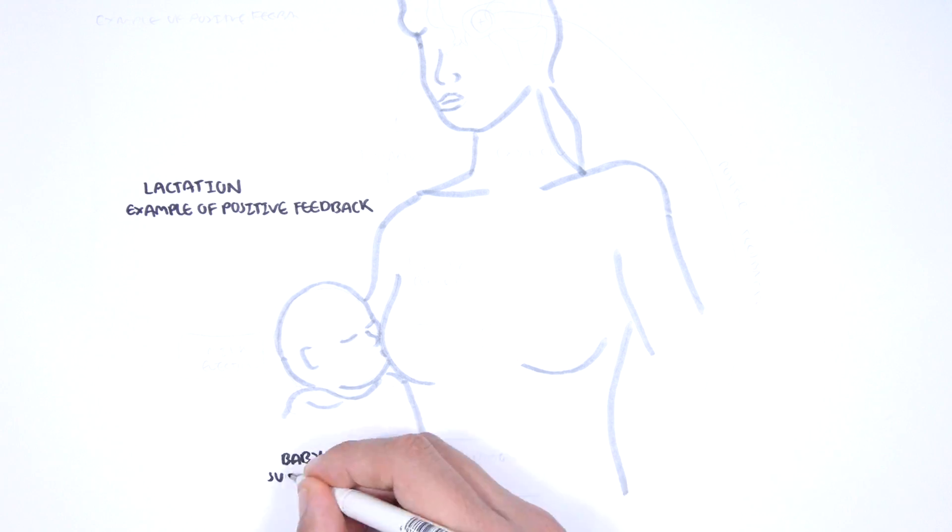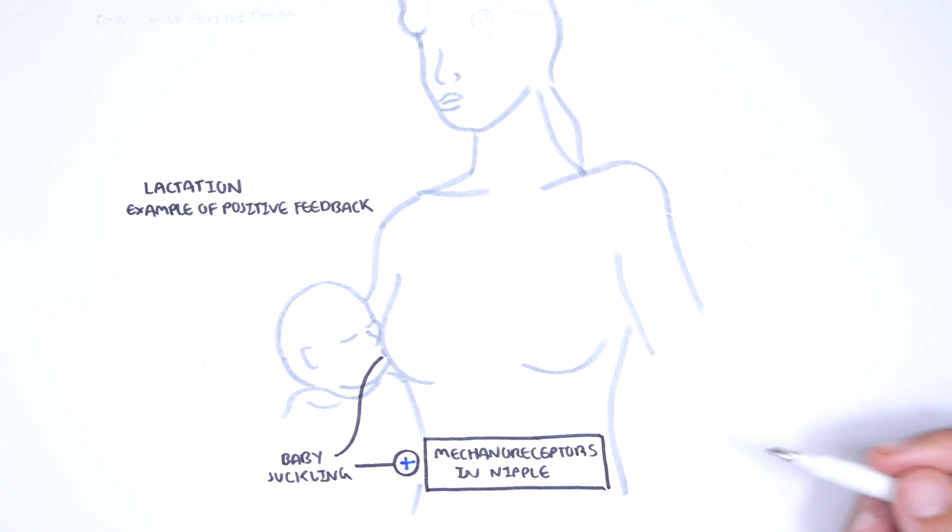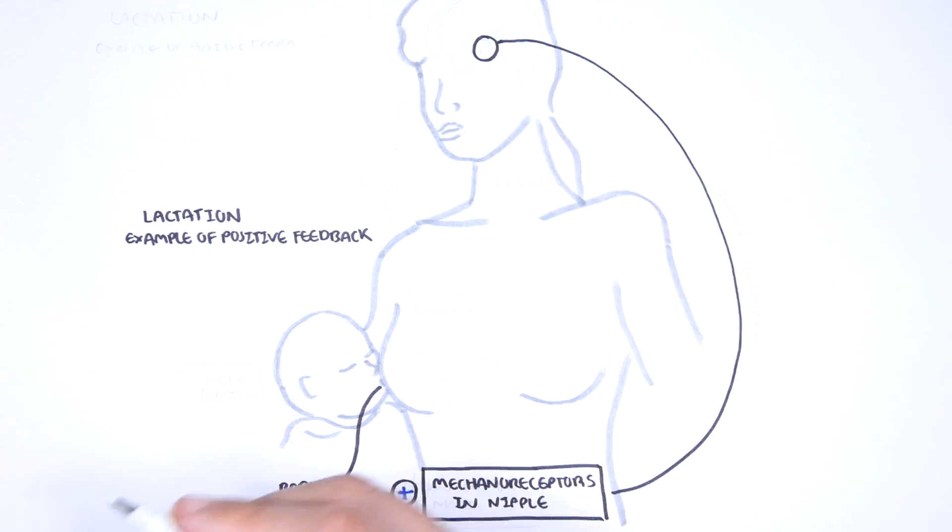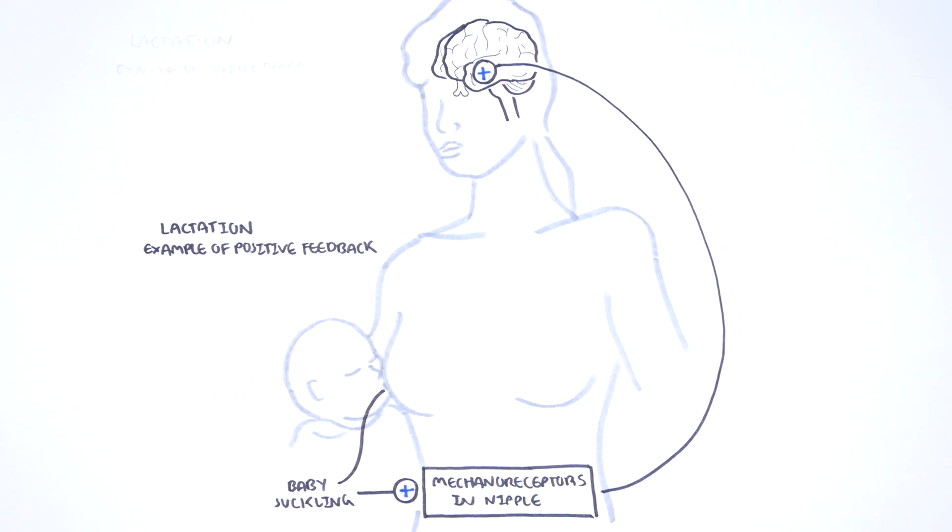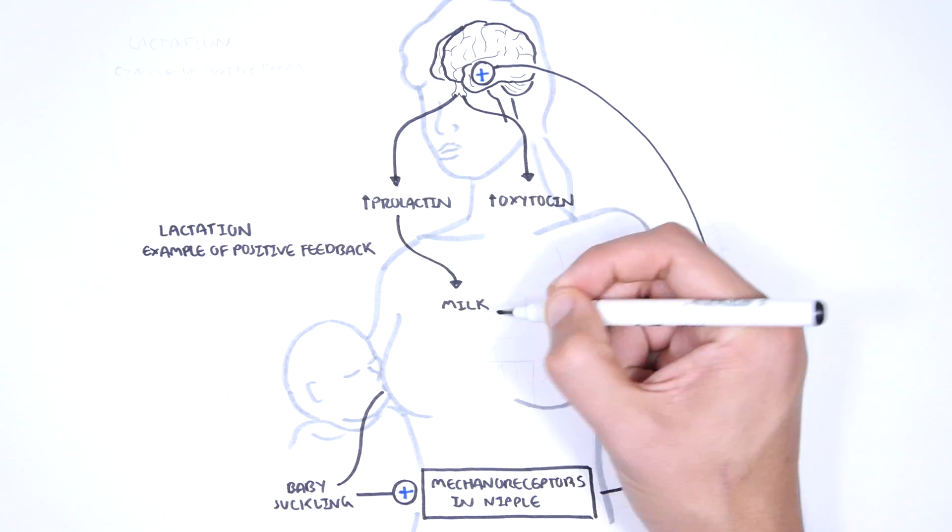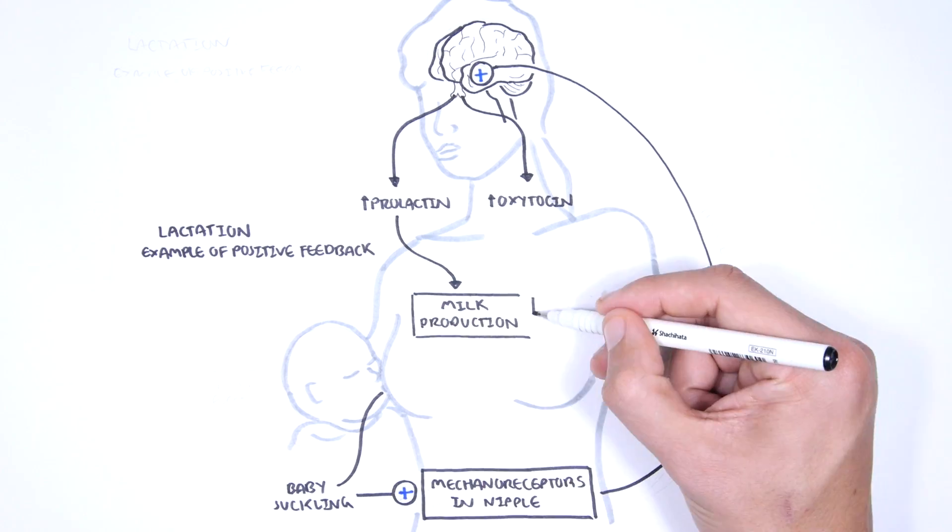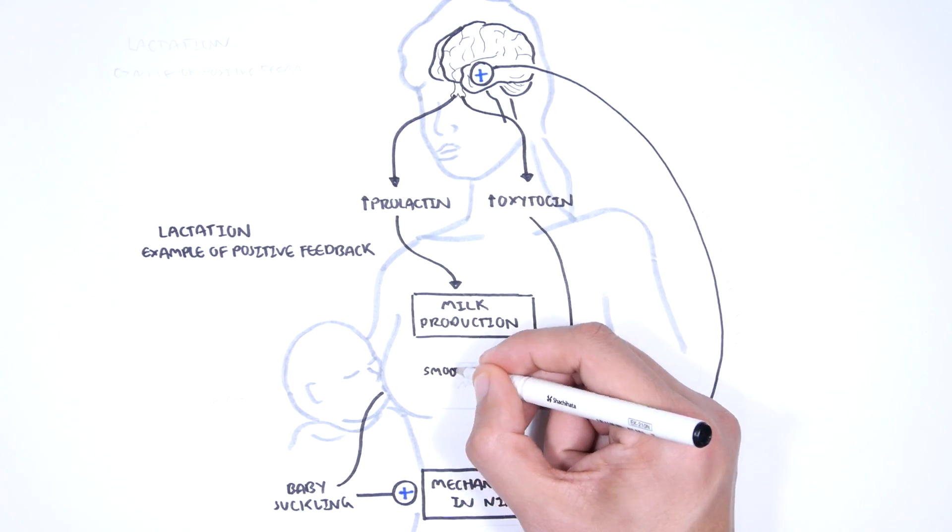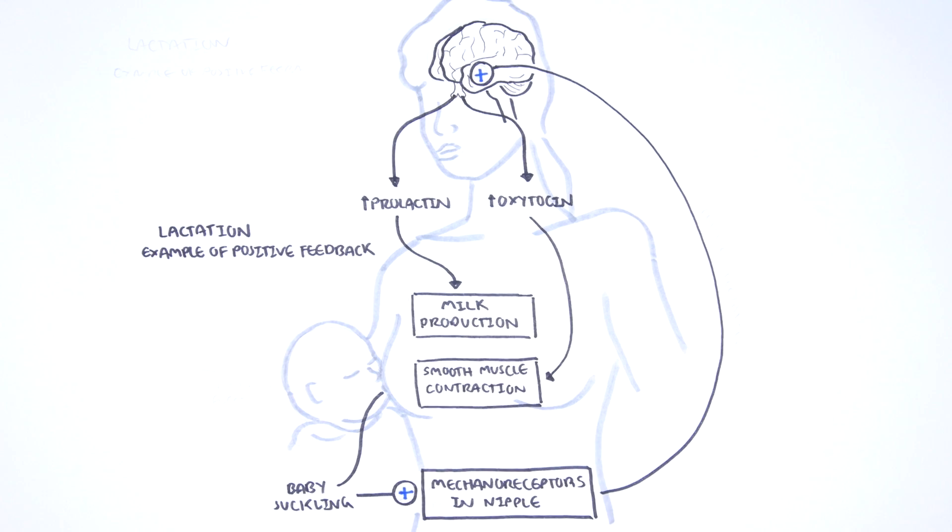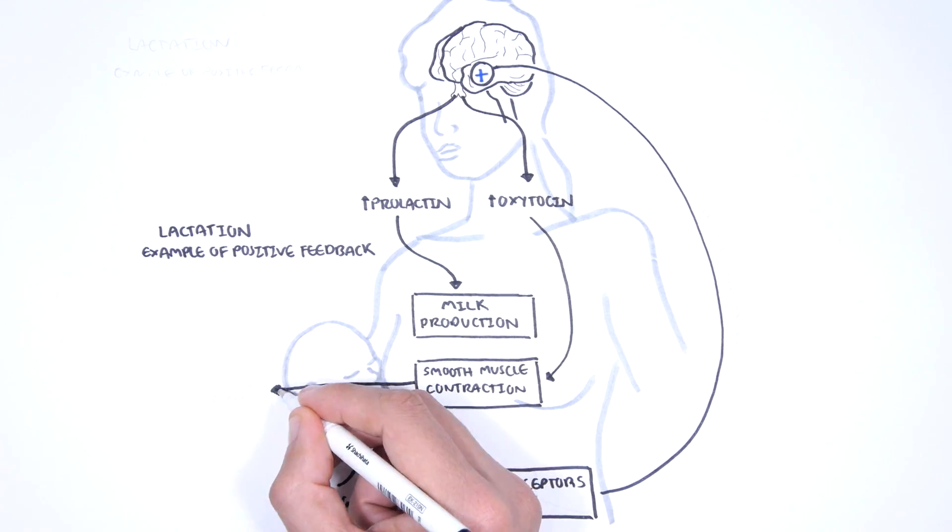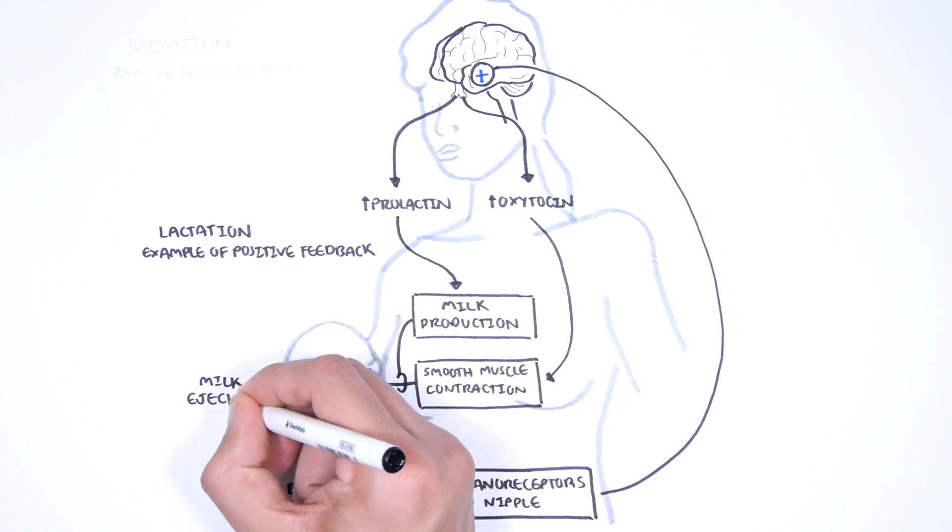A baby suckling on the mother's nipple will activate mechanoreceptors in the nipple. The receptors will send signals to the brain via neurons, which are the brain cells, telling the brain's pituitary gland to release two important hormones, prolactin and oxytocin. Prolactin is a hormone which stimulates milk production in the breast tissue, while oxytocin is a hormone which stimulates muscle contraction, smooth muscle contraction of the breast, allowing the milk produced to be ejected out of the nipple.